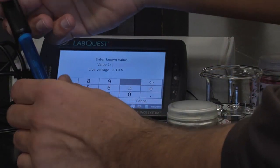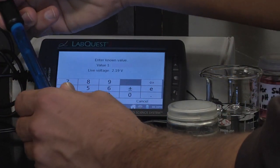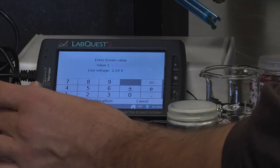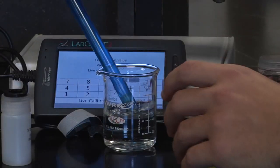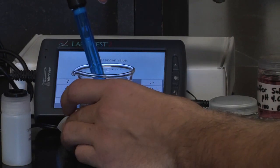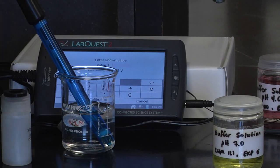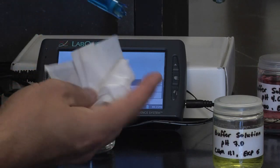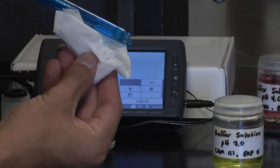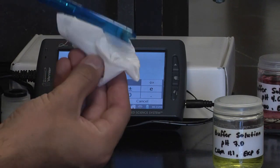We can now take our probe and rinse it in distilled water and dry it off with a kim wipe. Make sure to not smear the probe, as you might build a small electric charge on it. Just dab it dry.